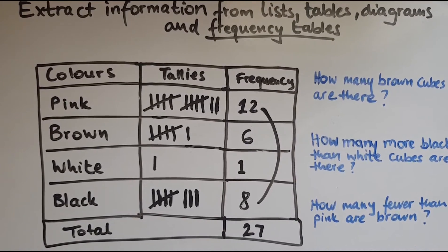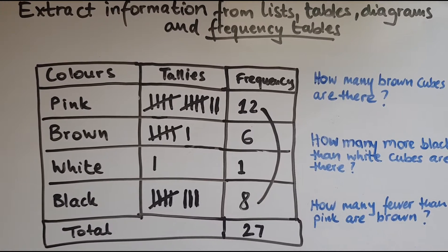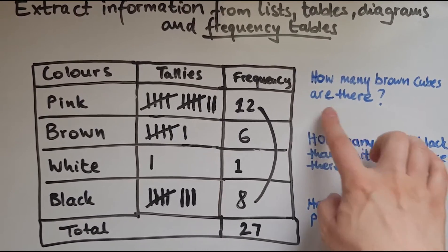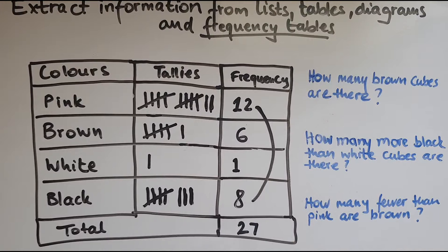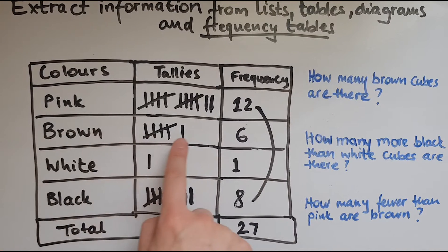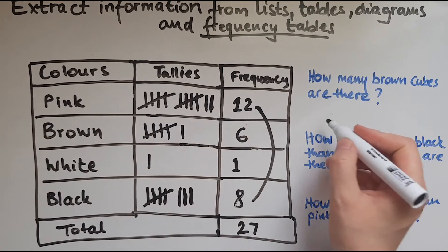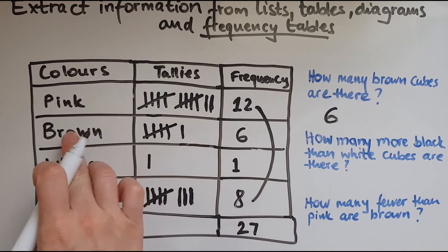This is how you draw a frequency table. So we'll now extract some information from the frequency table. These are just some examples of the questions that you could be asked. How many brown cubes are there? So we're looking at brown. Where is brown? There are six of them. Double checking.